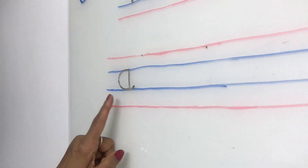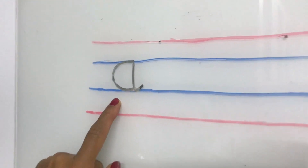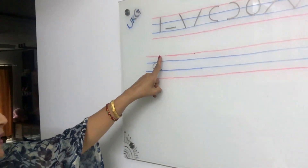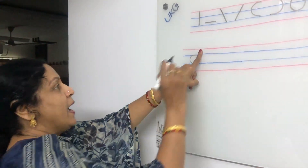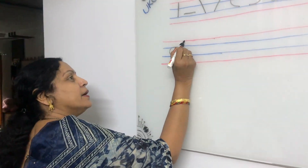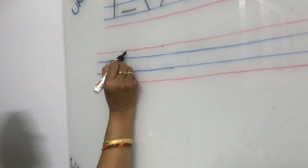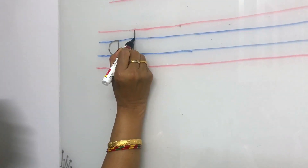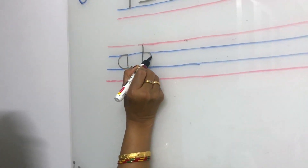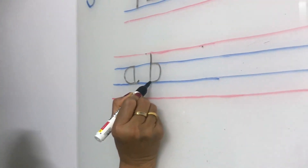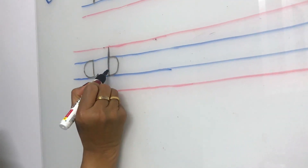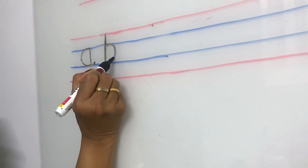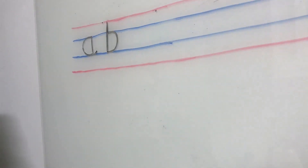What is this? This is small A. Now we are writing small B. Give finger gap. Red line to blue line standing line, and right curve makes small B.